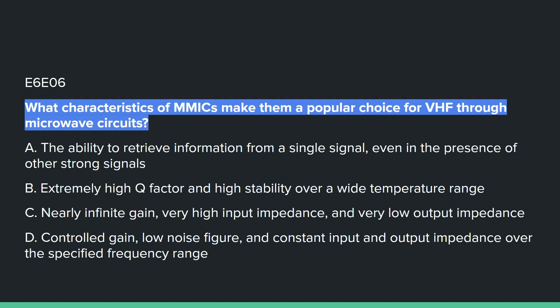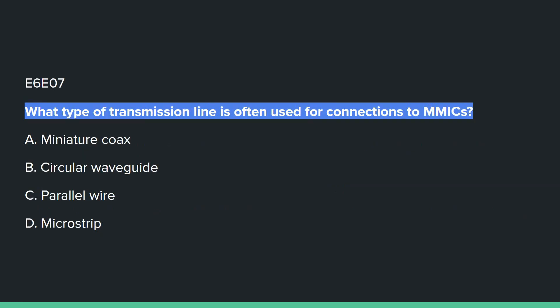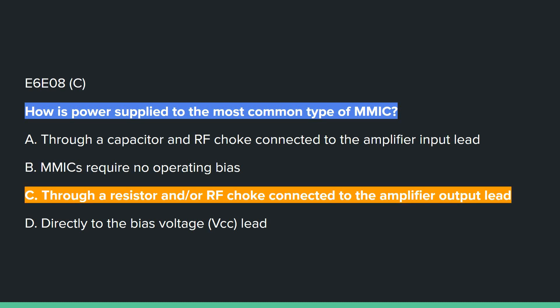E6E06: What characteristics of MMICs make them a popular choice for VHF through microwave circuits? D, controlled gain, low noise figure, and constant input and output impedance over the specified frequency range. E6E07: What type of transmission line is often used for connections to MMICs? D, microstrip. E6E08: How is power supplied to the most common types of MMIC? C, through a resistor and/or RF choke connected to the amplifier output lead.